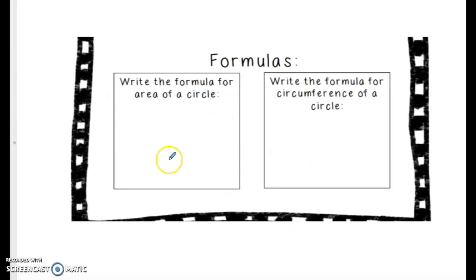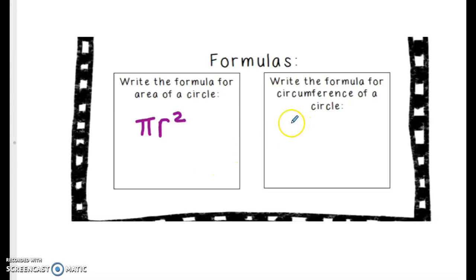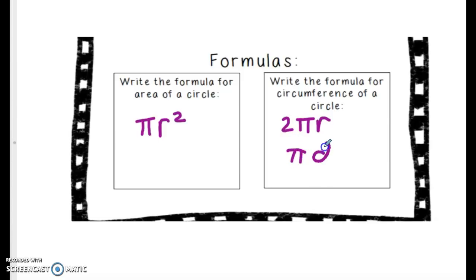There are two important formulas we need. First is area of a circle: area equals pi times the radius squared. For circumference we can use two different formulas: two times pi times the radius, or pi times the diameter. What you are given determines which formula you will use.